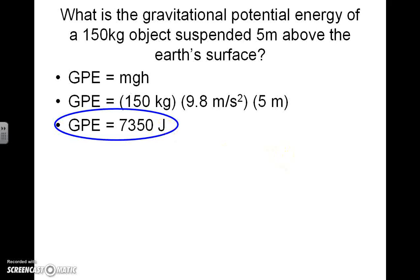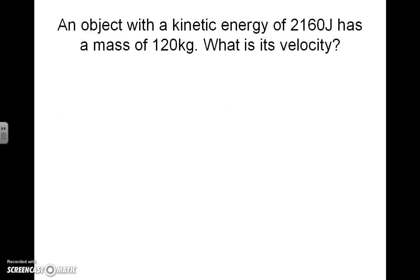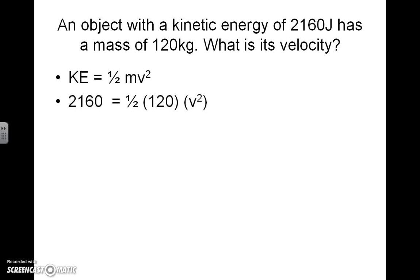Now I'm going to drop units out for the rest of these to speed things up a bit, so we can focus on the numbers and make sure you're getting the algebra correct. An object with a kinetic energy of 2,160 joules has a mass of 120 kilograms. What is its velocity? We're solving for a different variable here using the kinetic energy equation with these substitutions: 2,160 for kinetic energy, one half, 120 kilograms for mass, and velocity squared as the variable.